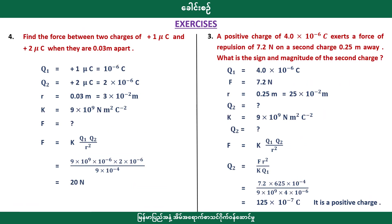Find the force between two charges: plus one microcoulomb, plus two microcoulomb, and plus two microcoulomb. They are 0.03 meters apart. The result is 20 Newtons. Now for number three with a positive charge: find the second charge given the first is 0.25 meters from the second.